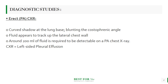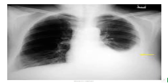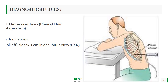For diagnosis we can perform a chest X-ray in the posterior-anterior erect view. It shows a curved shadow at the lung base which blunts the costophrenic angles, and this curved shadow may form a meniscus sign as fluid appears to track up the lateral chest wall. Around 200 ml of fluid is required to be detectable. This chest X-ray is showing left-sided pleural effusion with a diminished costophrenic angle and a meniscus sign.